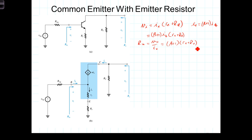This is significant. One of the drawbacks of the common emitter amplifier was that it had a relatively small input resistance, but here we've got an input resistance that's proportional to beta. Beta is typically a fairly large number on the order of 50 to 200, so the input resistance equals beta times the sum of r_E plus the emitter resistor R_E. We can control the input resistance by adding this resistor to the emitter.